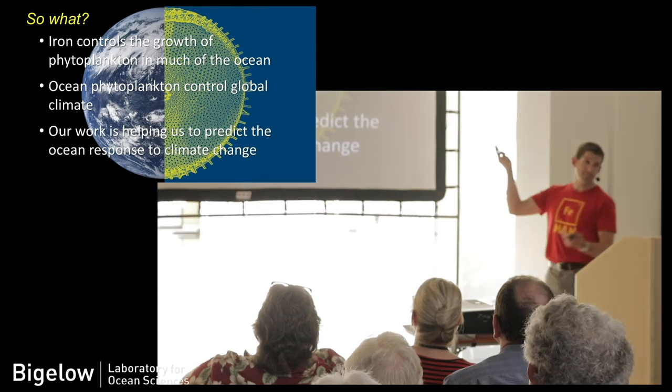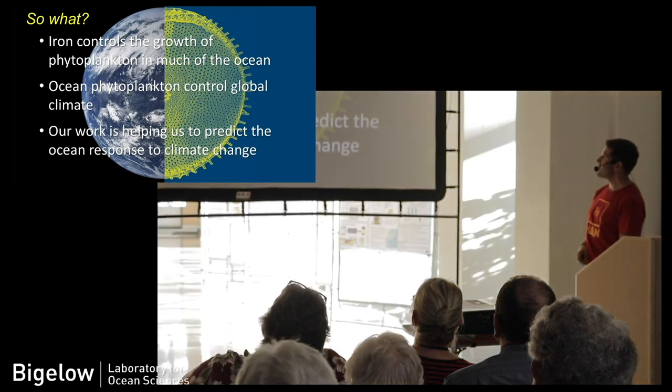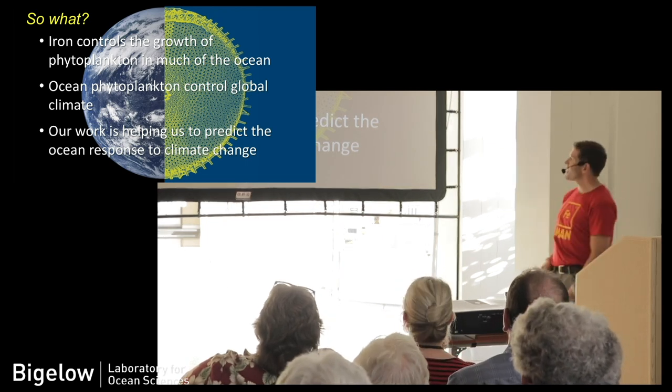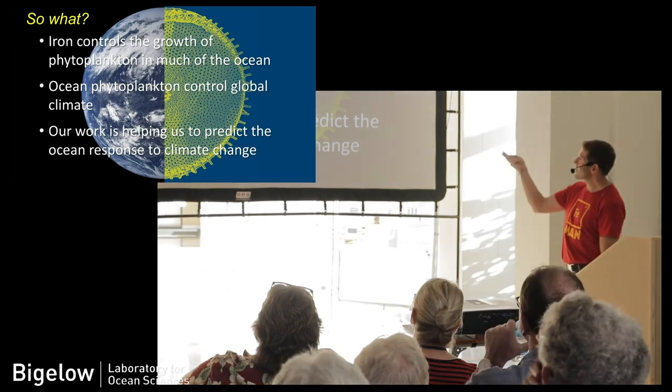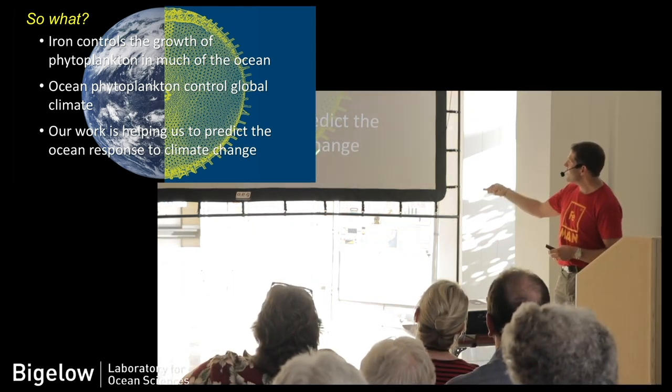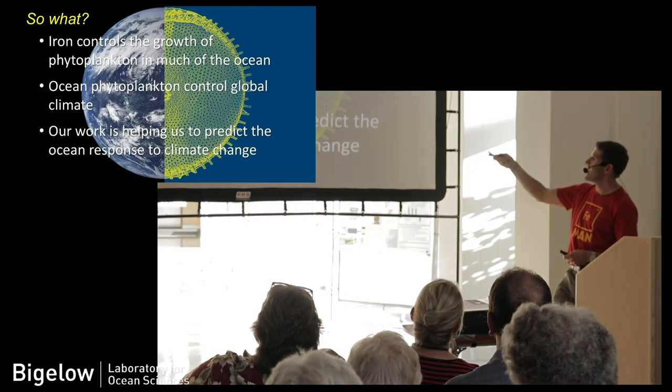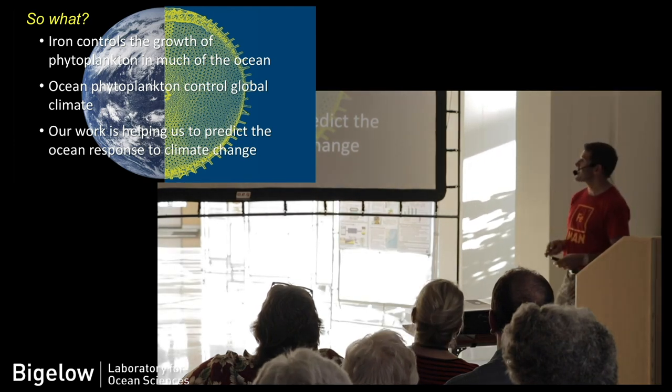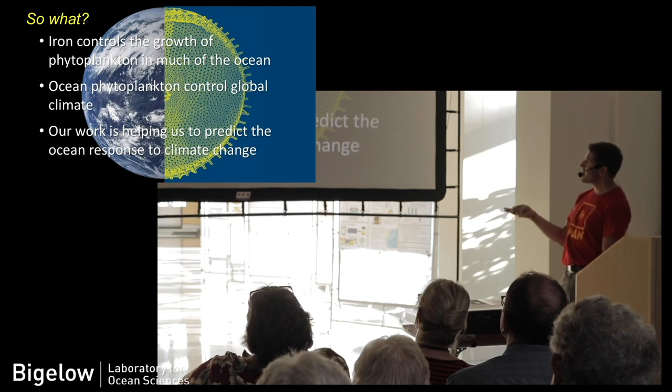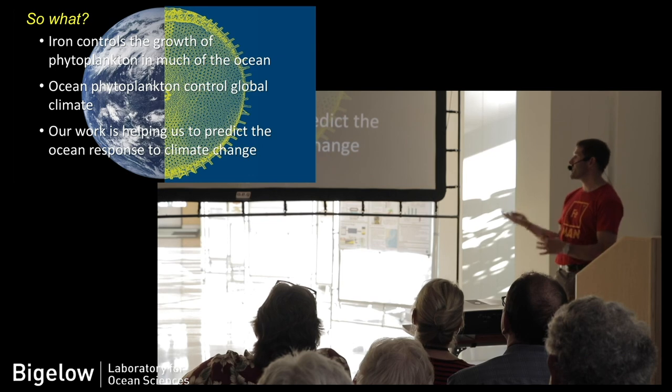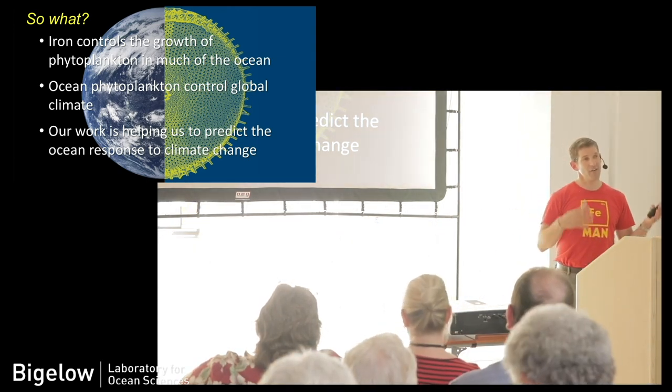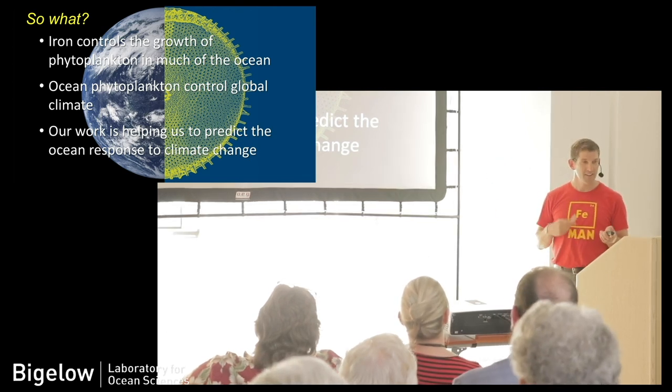So, in conclusion, three things I want you to hopefully take away from this. First, iron controls the growth of phytoplankton in the ocean. This is the beauty. This is what we call biogeochemistry, the idea that the biology controls these large geochemical cycles. We tried to juxtapose the globe and this phytoplankton cell to highlight the connection between the single cells in the ocean and this huge biome. That's something that really inspires me. Second, these ocean phytoplankton control the global climate through some of these controls. And finally, our work here at the lab and in my group is helping us to predict the ocean response to climate change, in my case through iron, in Debbie's case through nitrogen. All of us at Bigelow are trying to study how our world is behaving and changing through the organisms that live in the ocean. Thank you.